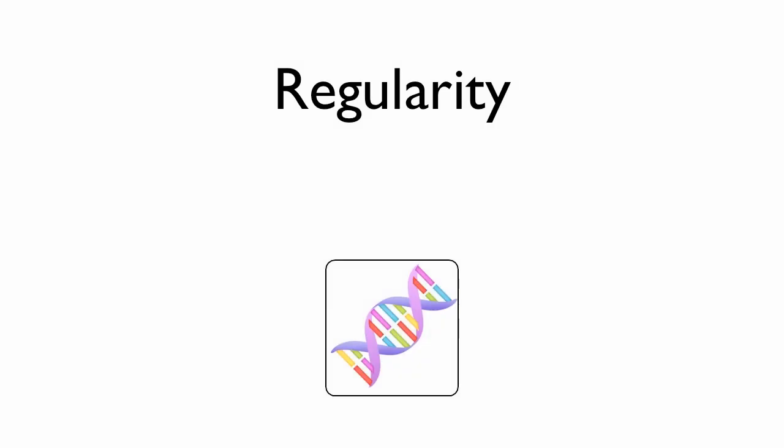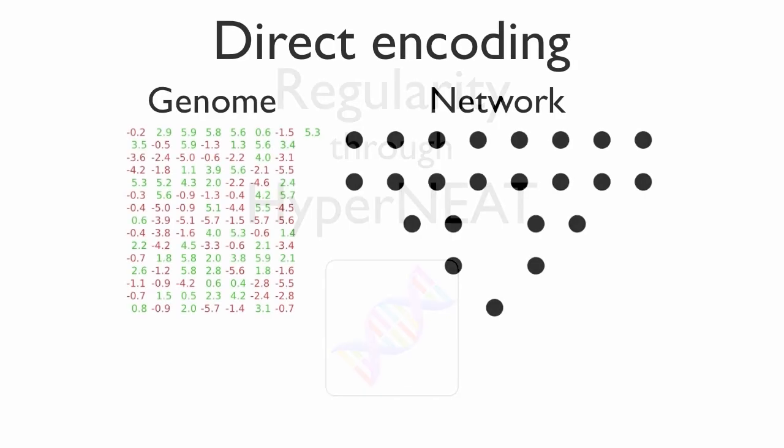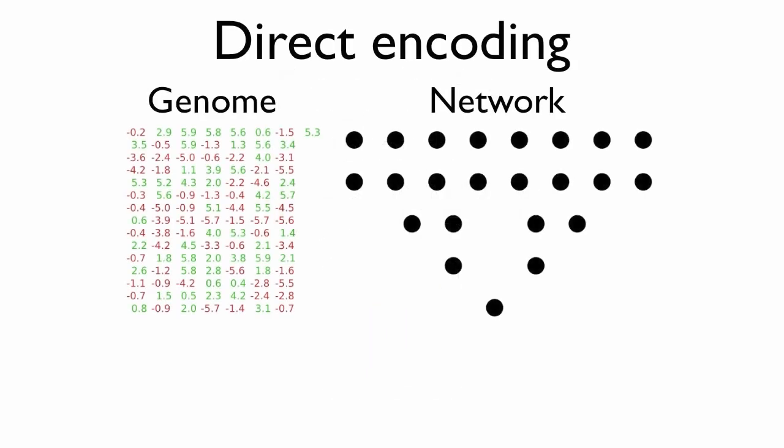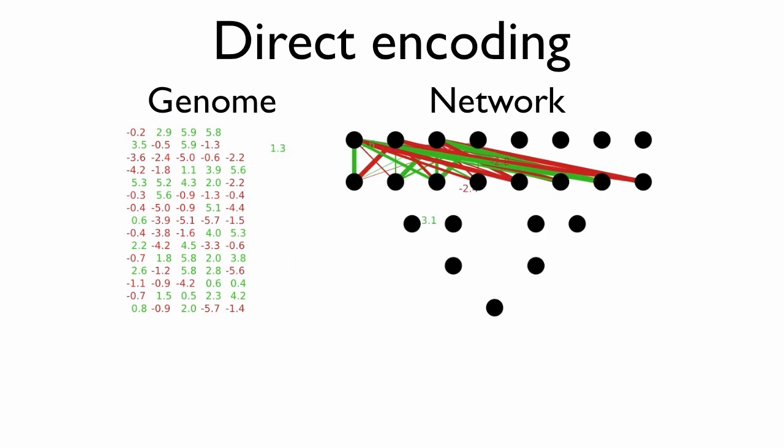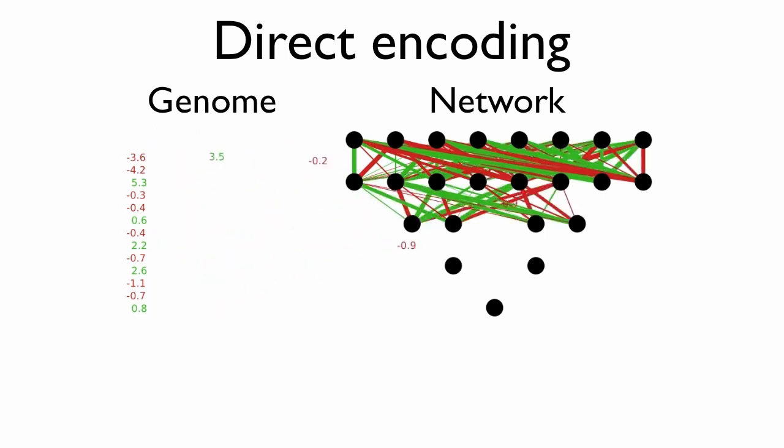To encourage regularity, we make use of an indirect encoding, called HyperNEAT. The classic approach is to use a direct encoding, in which every element in the genome encodes for a single feature of the network. This method leads to highly irregular networks.